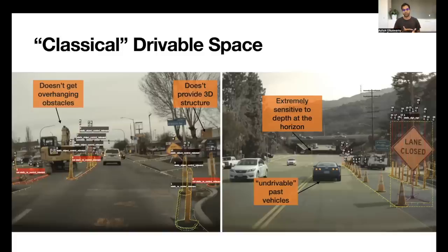It also, this kind of representation also does not provide the full 3D structure of the scene. So it's hard to reason about overhanging obstacles or walls or other things that can occlude the scene.